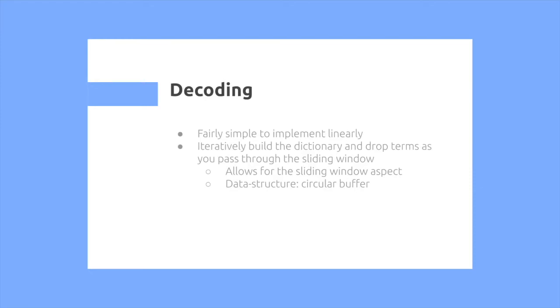So what does implementation look like? So it turns out for the decoder, it's fairly simple. You can do this in a linear fashion, but just iteratively build a dictionary and drop terms as you pass through the sliding window. So if you're interested in implementing this, you should look into a circular buffer data structure.